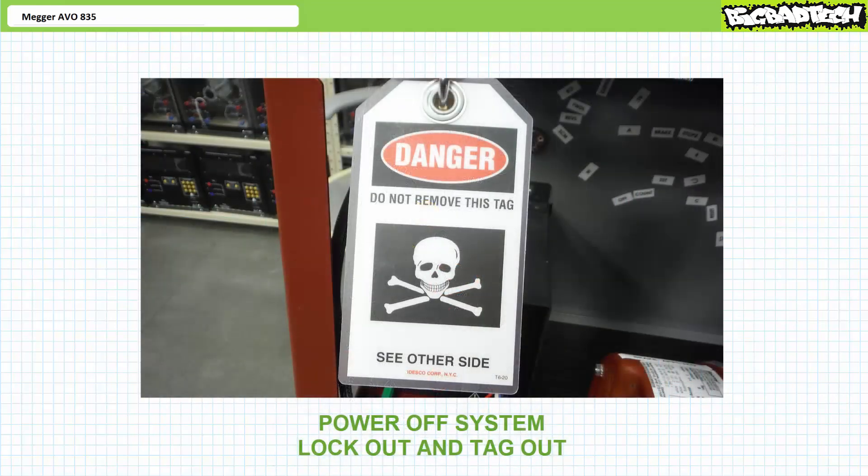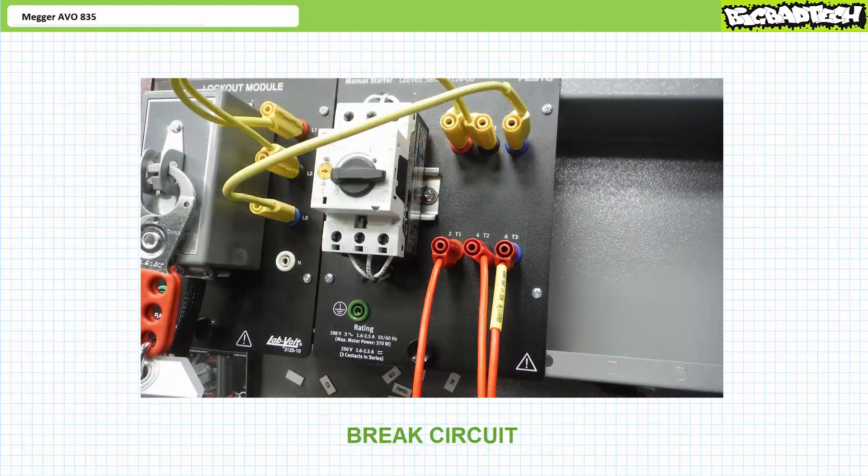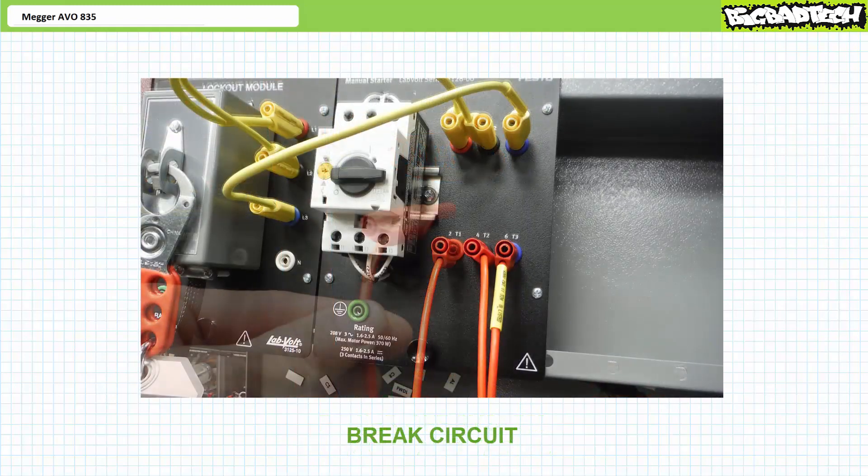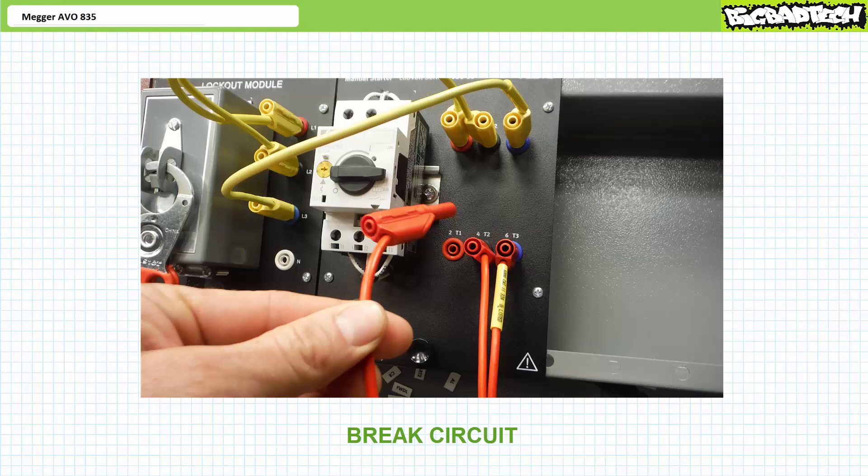Power off the power supply. Lock the system out and tag it out. Break the circuit. In this case, we'll break the L1 connection between the manual motor starter and the motor.